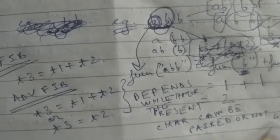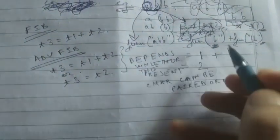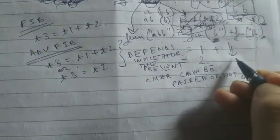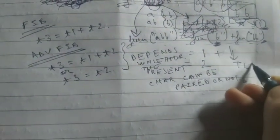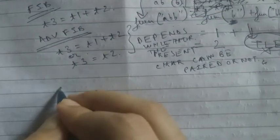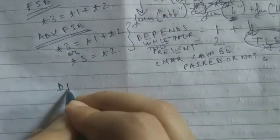If we use recursion for this, we will obviously get a big TLE. So we can't use recursion — that is the reason why we would be using the DP concept.